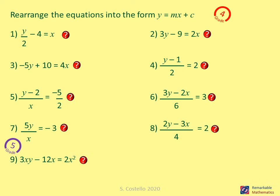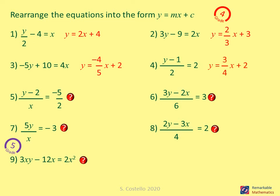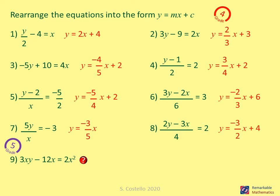Going through the answers for the rearrangement questions: Question 1 is y equals 2x plus 4; Question 2 is y equals two over three x plus three; Question 3 is y equals minus four over five x plus two; Question 4 is y equals three over four x plus two; Question 5 is y equals minus five over four x plus two; Question 6 is y equals minus two over three x plus six; Question 7 is y equals minus three over five x; Question 8 is y equals minus three over two x plus four; Question 9 is y equals two over three x plus four.